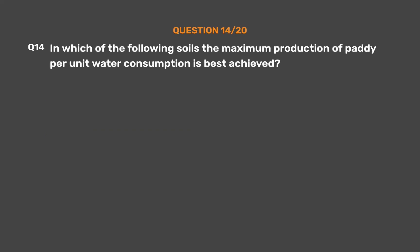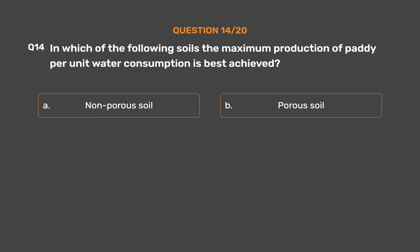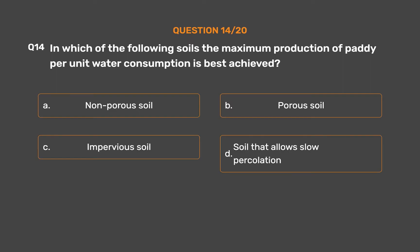Question number 14. In which of the following soils is the maximum production of paddy per unit water consumption best achieved? Option A: Non-porous soil. Option B: Porous soil. Option C: Impervious soil. Option D: Soil that allows slow percolation. The correct answer is Option D, soil that allows slow percolation.